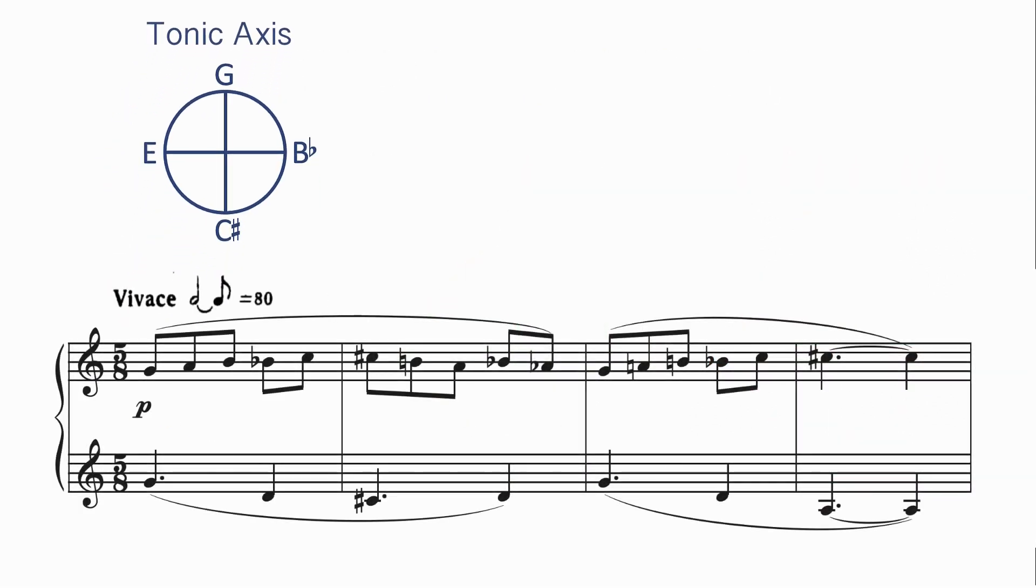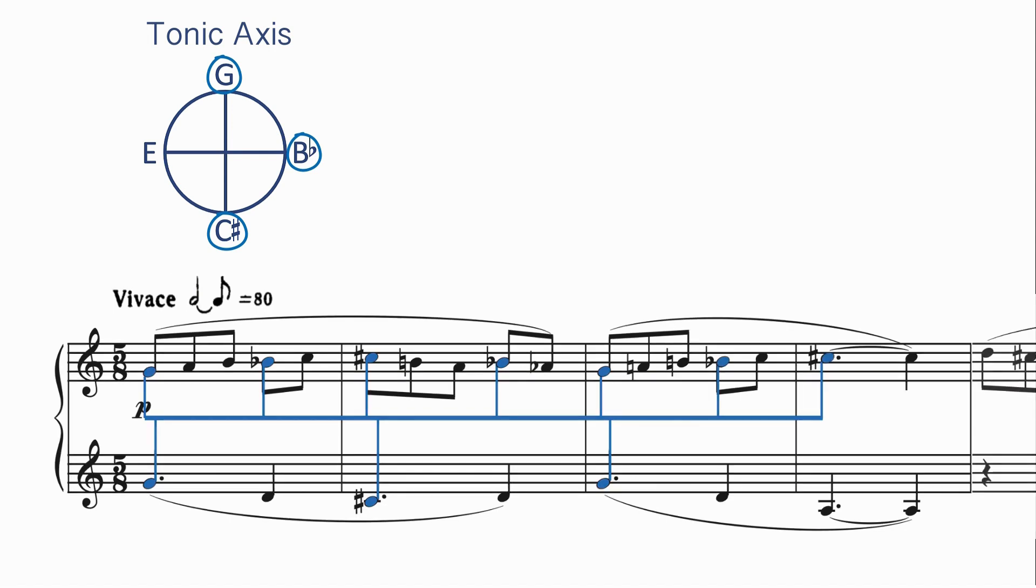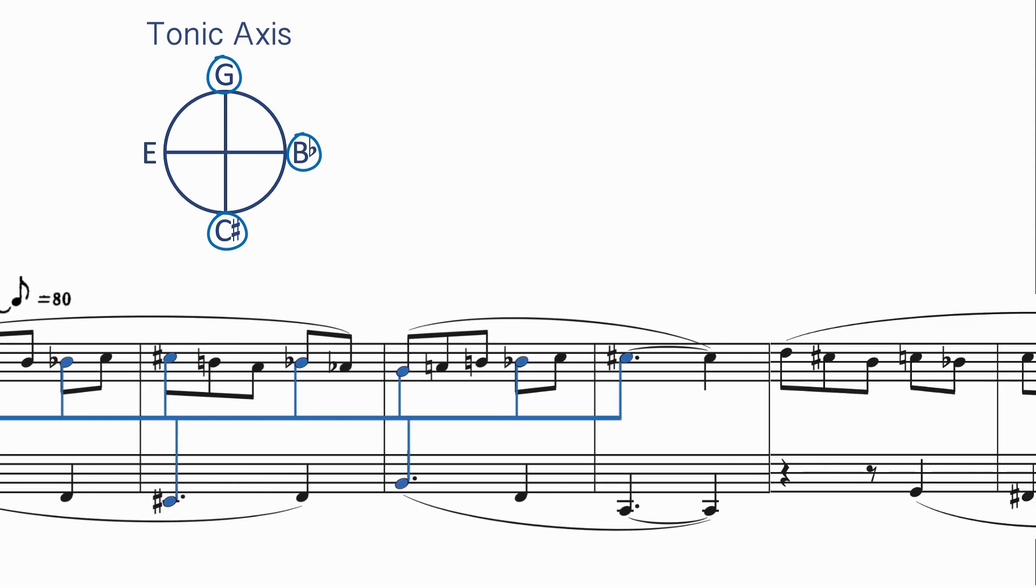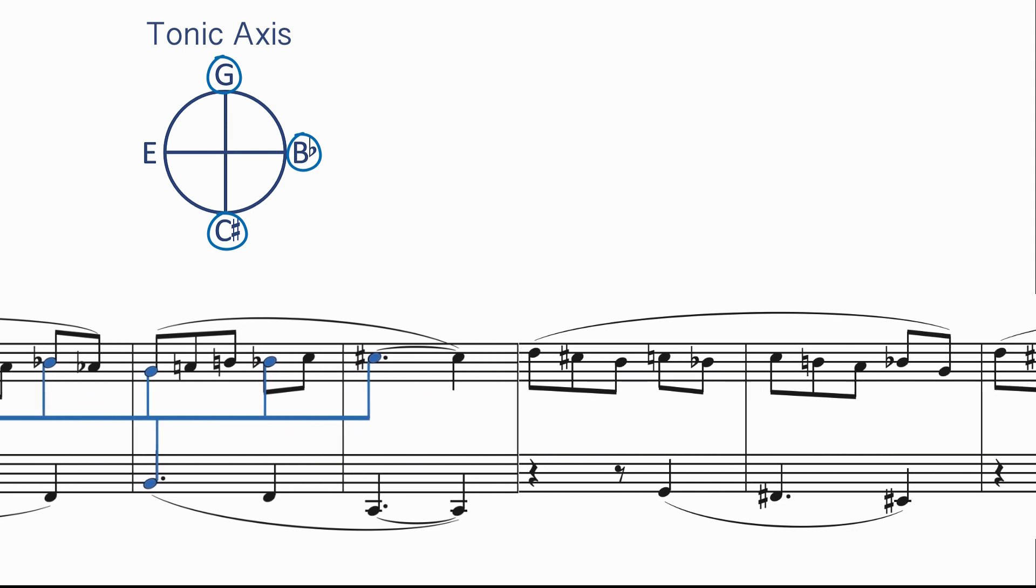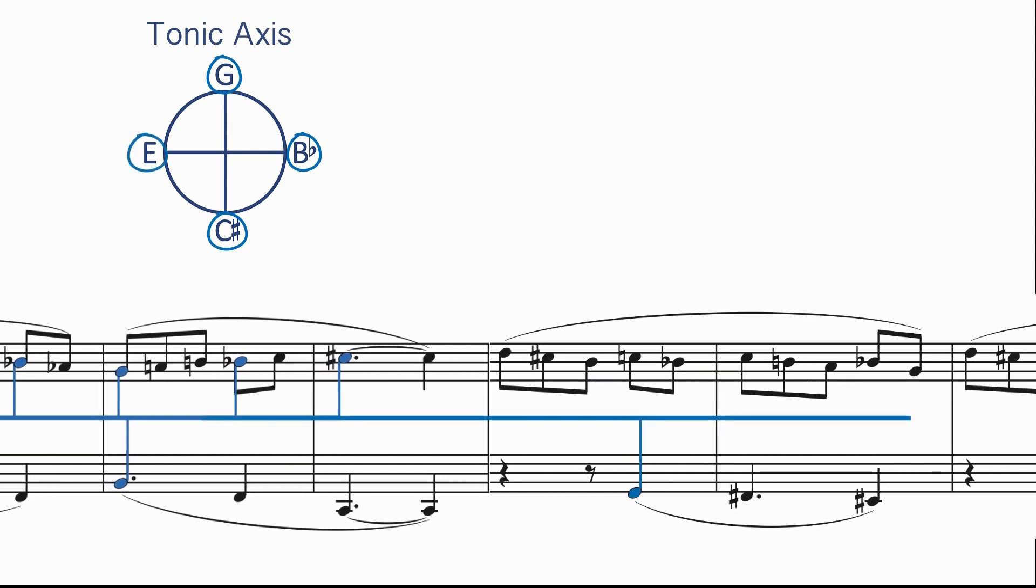Now, if we return to the first section of this piece, we'll find all kinds of structural points that match with this tonic axis of symmetry. The G, the B flat, the C sharp. Notice that these are all metrically strong locations. If we continue further into measure 5, we can complete this circle of symmetry by finding the E in the left hand before the resolution back to G.